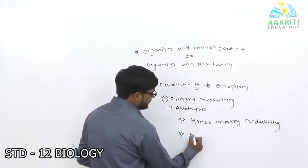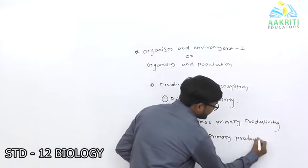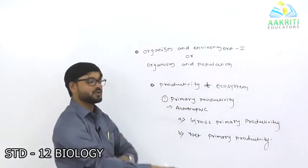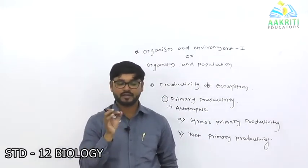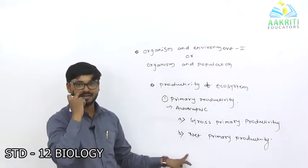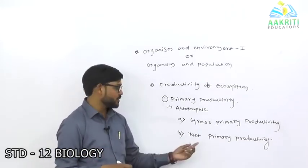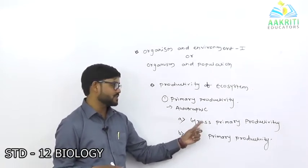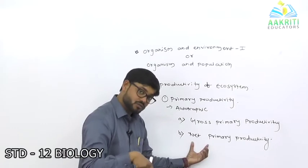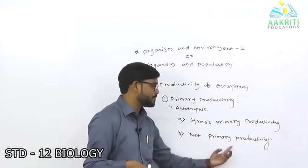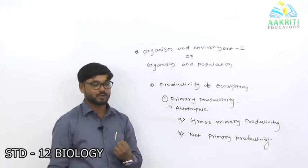The second type is net primary productivity — it is the amount of organic matter stored by green plants apart from what is used in respiration. So gross primary productivity covers the total rate of photosynthesis including respiration, while net primary productivity is how much they stored after respiration. These are the two parts of primary productivity.